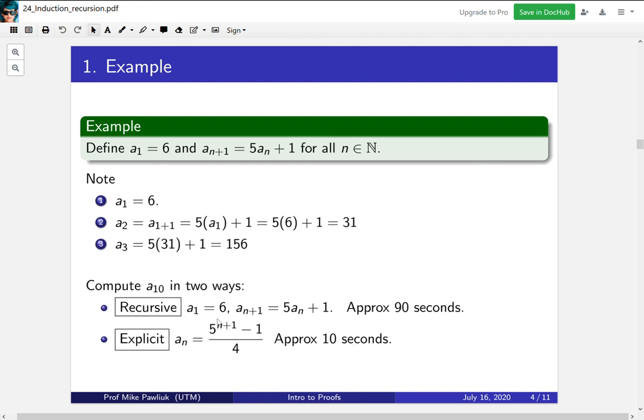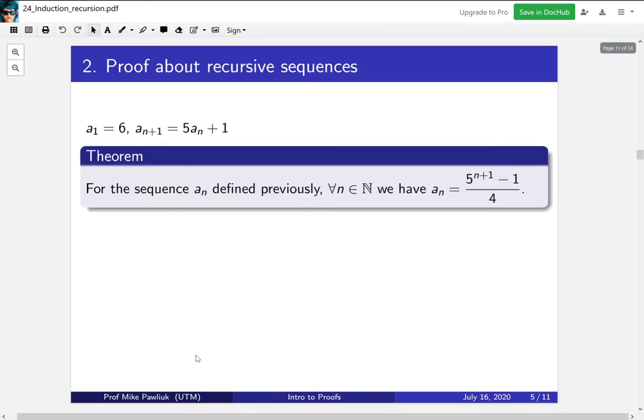Now a question you might have is, well, you should have two questions. One, where did this formula come from? And two, is this formula correct? So we're not going to answer the first one, where it came from. That's for a different course. But we will answer, why is it correct? So let's prove that all of the aₙ really do satisfy this equation, that this is a formula for them. Now to do this, what does a proof mean in this case? Well, it means we need to show that a₁ is of this form, a₂ is of this form, a₃, etc.